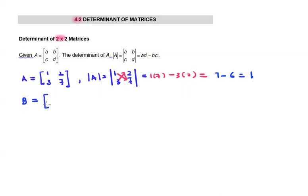Let's consider another example. Matrix B: 6, 2, 3, 4. Its determinant.